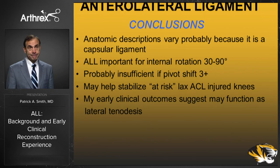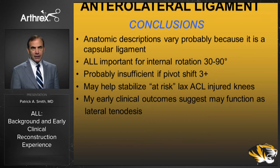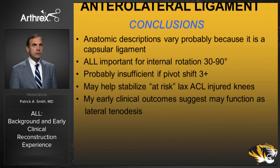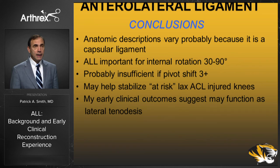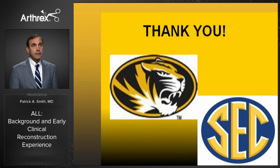In conclusion, the anatomic descriptions of the ALL vary because it is a capsular ligament — different from the ACL or LCL, within the capsule, best seen when you internally rotate during dissection. It is important for internal rotation from 30 to 90 degrees, as Dr. Kleiss's biomechanical work has shown. If you have that three plus pivot shift patient, think about adding an ALL to your ACL reconstruction. I am trying to identify patients at risk for retears and adding the ALL to hopefully achieve better clinical outcomes. Short-term follow-up suggests a lateral tenodesis effect — decreasing hyperextension while maintaining full extension — and that may be the key to avoiding re-injury.